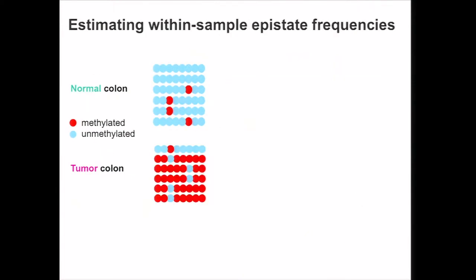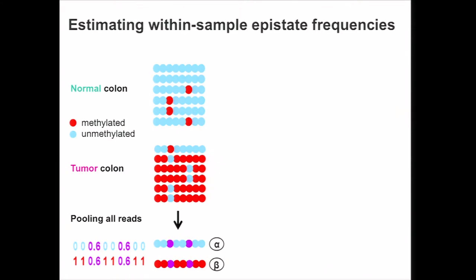When we have the epistates, we estimate the epistate frequencies for each individual sample. As an example, say we have a pair of colon samples — one normal and one tumor. If we pool the reads, we learn two epistates: epistate alpha and epistate beta, where epistate alpha is less methylated and epistate beta is more methylated.